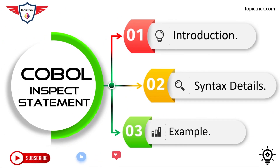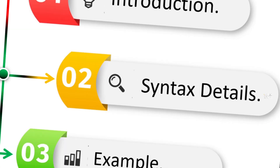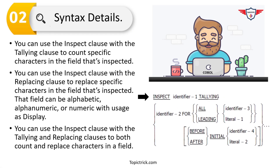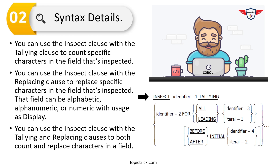Now let's move on to the detailed explanation of COBOL inspect syntax. The COBOL inspect statement is fairly simple and easy to understand. On the right-hand side of the screen you'll find the simplified syntax. The inspect statement starts with the INSPECT keyword followed by an identifier — the variable on which you want to perform the operation, which holds the string.